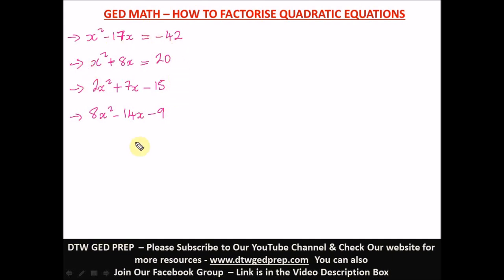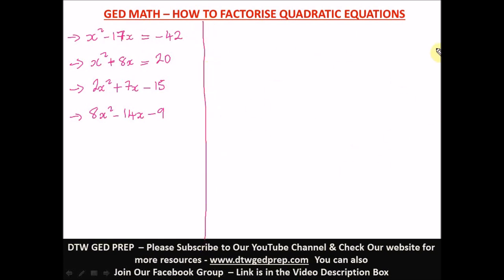Let's quickly solve these questions. The first one: we have x-squared minus 7x equals negative 42. This is a quadratic equation, and if they tell you to factorize, you equate to zero. So take this negative 42 to the other side.